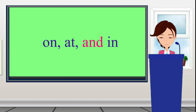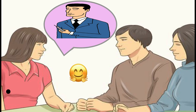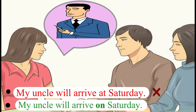Have a look at these three prepositions which are generally confused: ON, AT, IN. ON is used with the days of the week or month — for example, on Friday, on March 25, on New Year's Day. So don't say 'my uncle will arrive at Saturday.' Say: my uncle will arrive on Saturday.